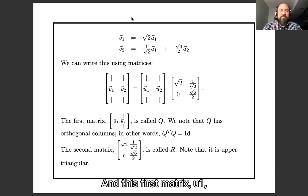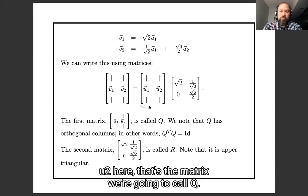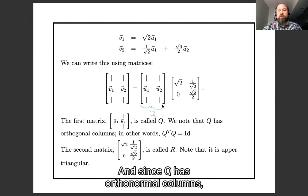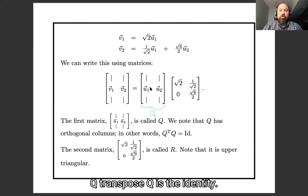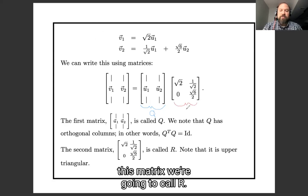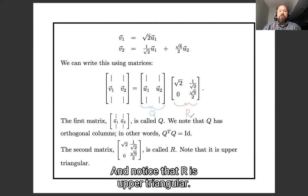And this first matrix, u1, u2 here, that's the matrix we're going to call Q. And since Q has orthonormal columns, Q transpose Q is the identity.